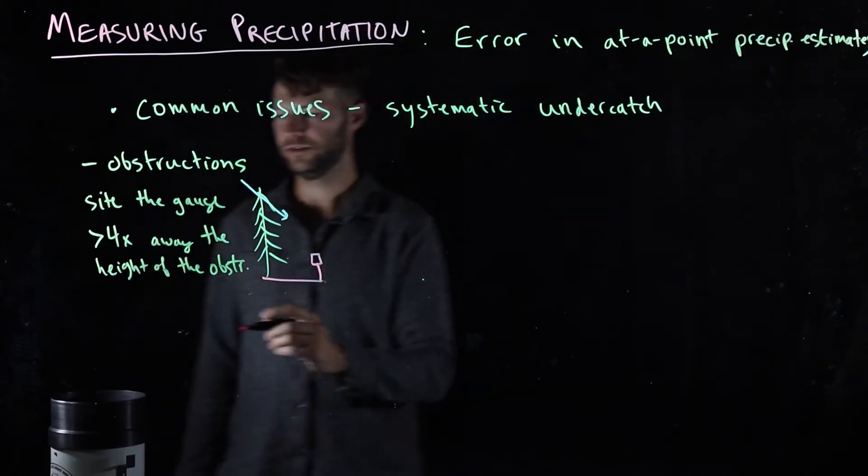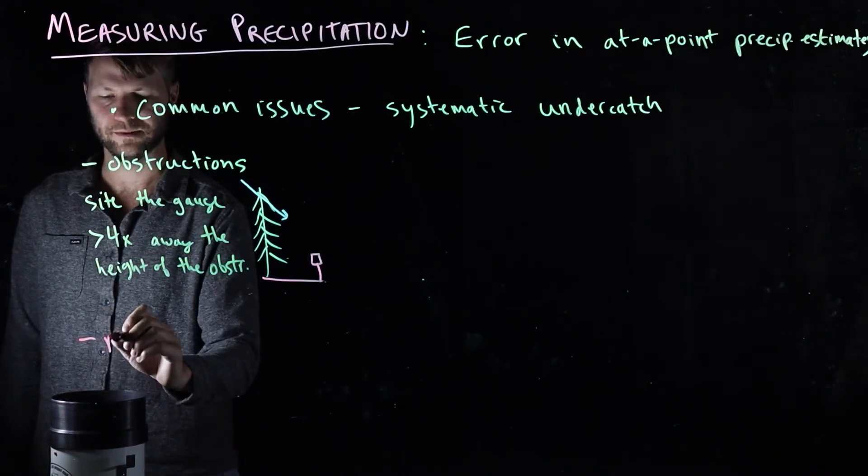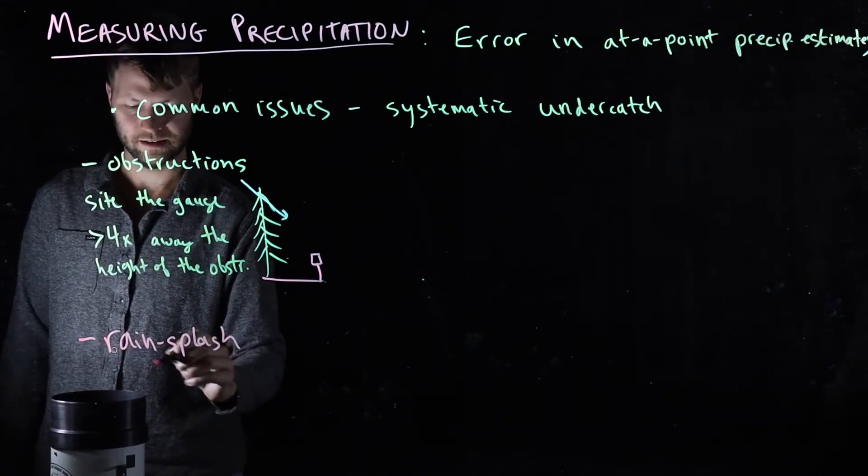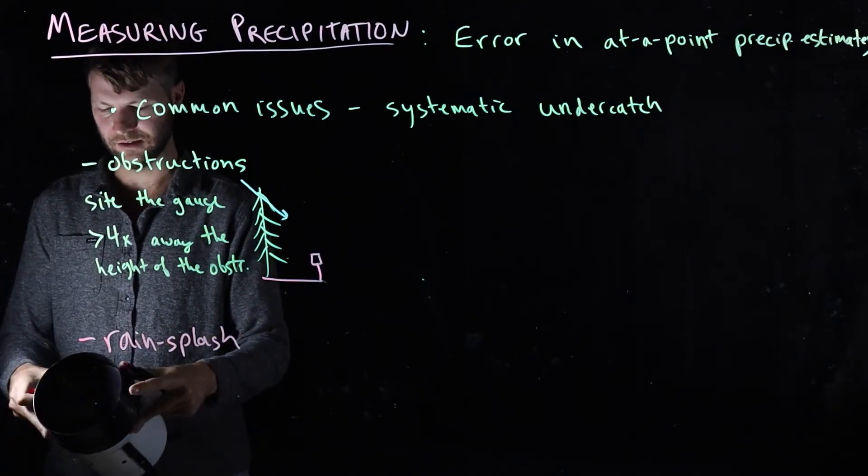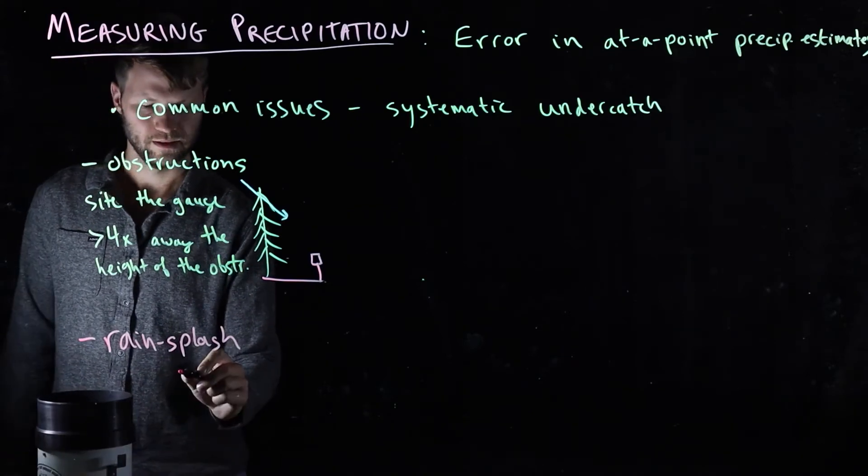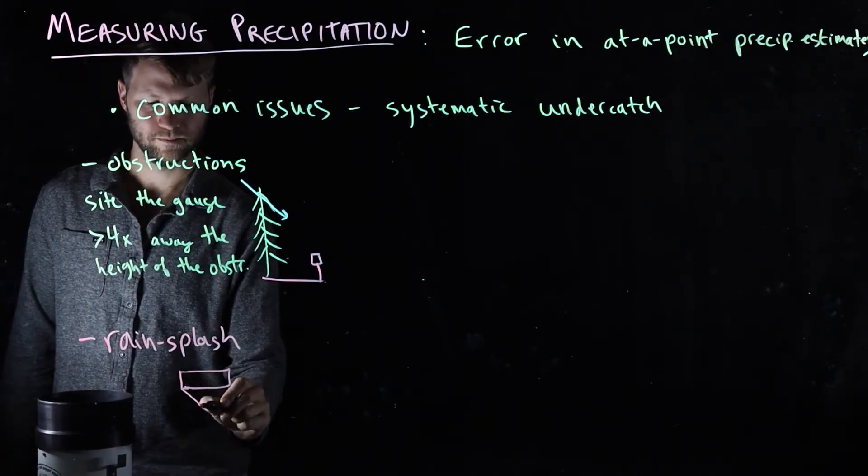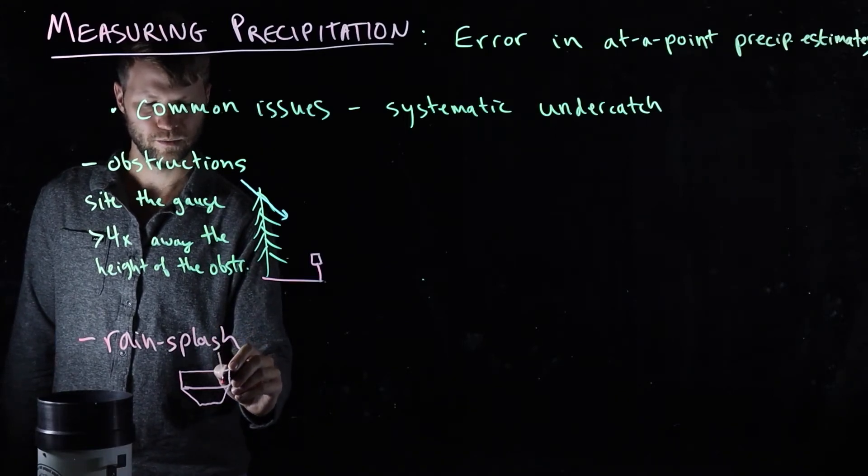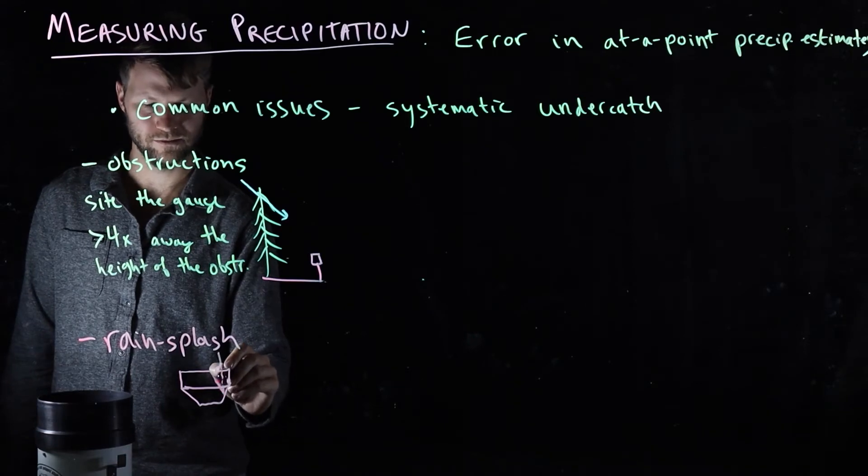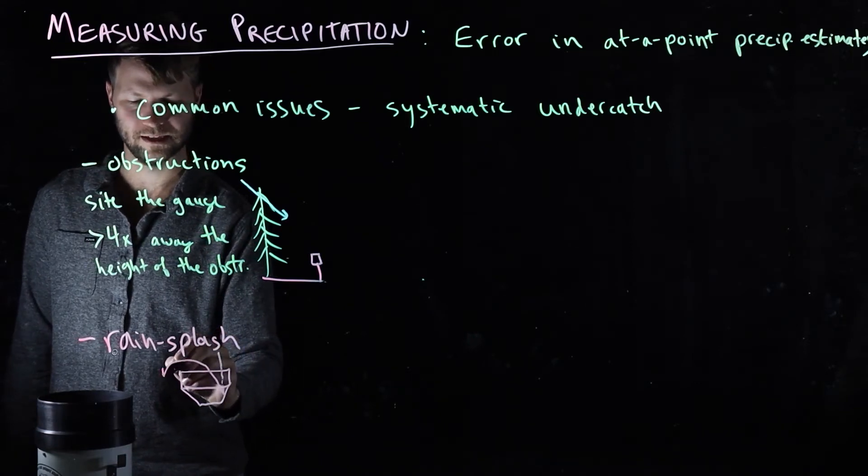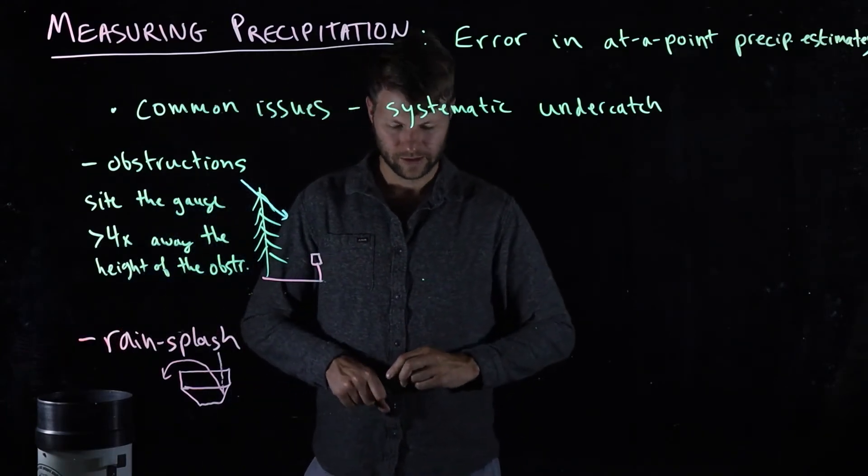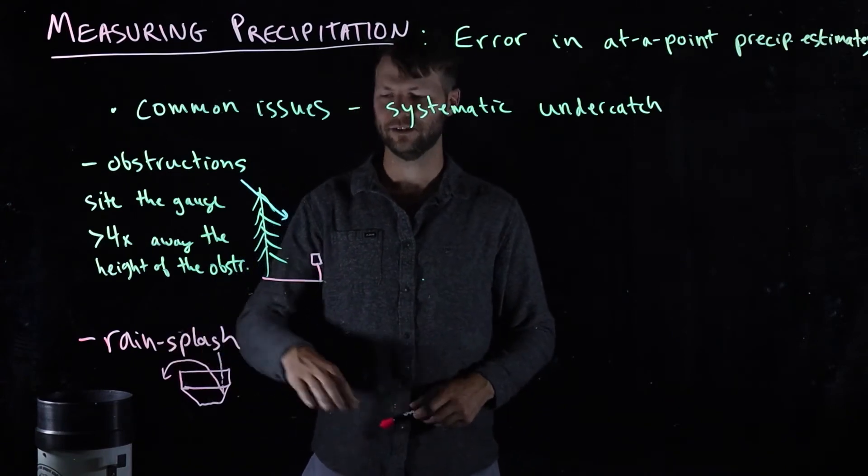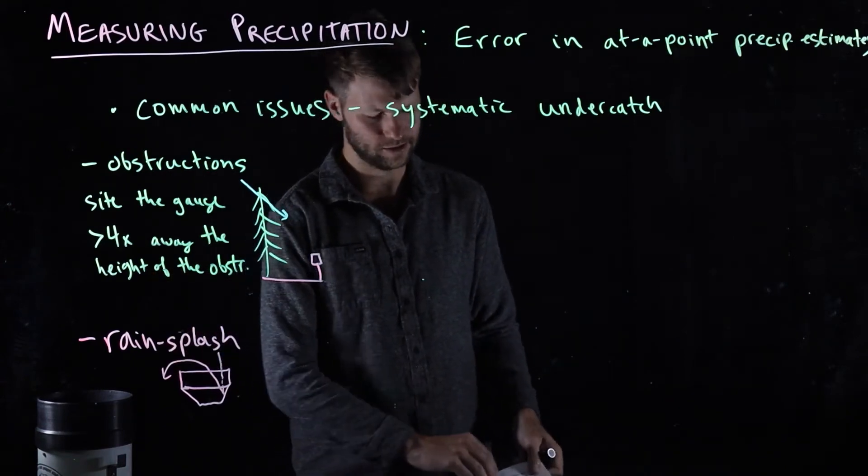Another very common issue is the phenomenon of rain splash. And the idea here is that even though this funnel has this little lip on the top of it, it's still possible that raindrops coming in at very high speed will bounce off of this sloped funnel surface and get ejected from the rain gauge. And obviously, this rain should have been counted, but because it's being bounced out of the gauge, it's not going to be counted.